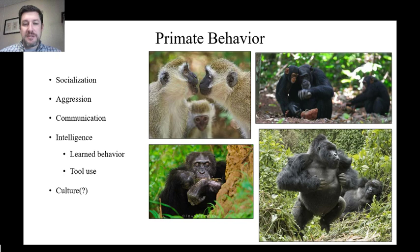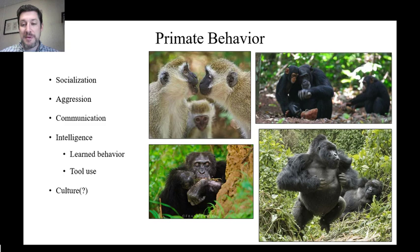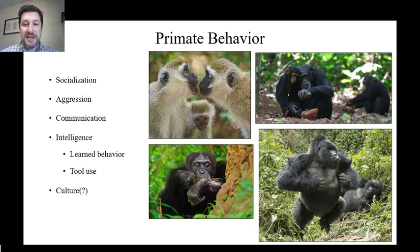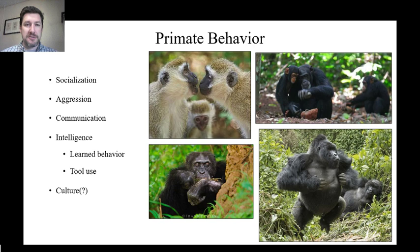Primate behavior can be divided into several categories: socialization — how do individuals interact with each other; aggression — how they interact when they're not happy with each other; and communication — how they communicate. Primates don't have a hyoid bone so they can't utilize complex language the way we can, but they are able to vocalize. From there we'll look at intelligence, learned behavior, tool use, and then ask whether primates have culture — a quality often thought to be uniquely human.